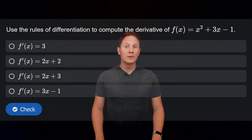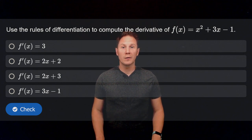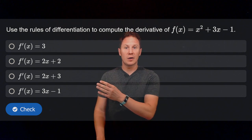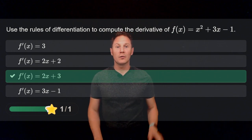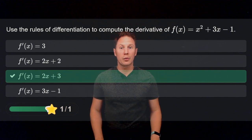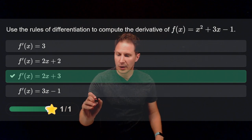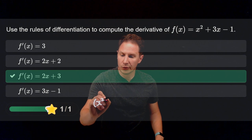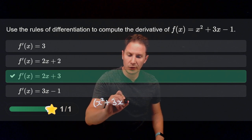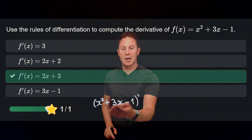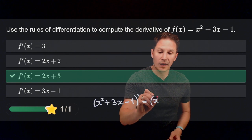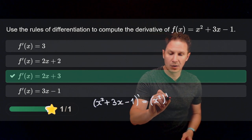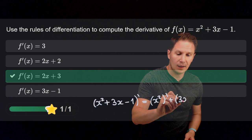Use the rules of differentiation to compute the derivative of f of x equals x squared plus 3x minus 1. The derivative of this polynomial is 2x plus 3. To differentiate this polynomial, we first use the sum and difference rules to break up the derivative into the derivative of each term, added and subtracted.